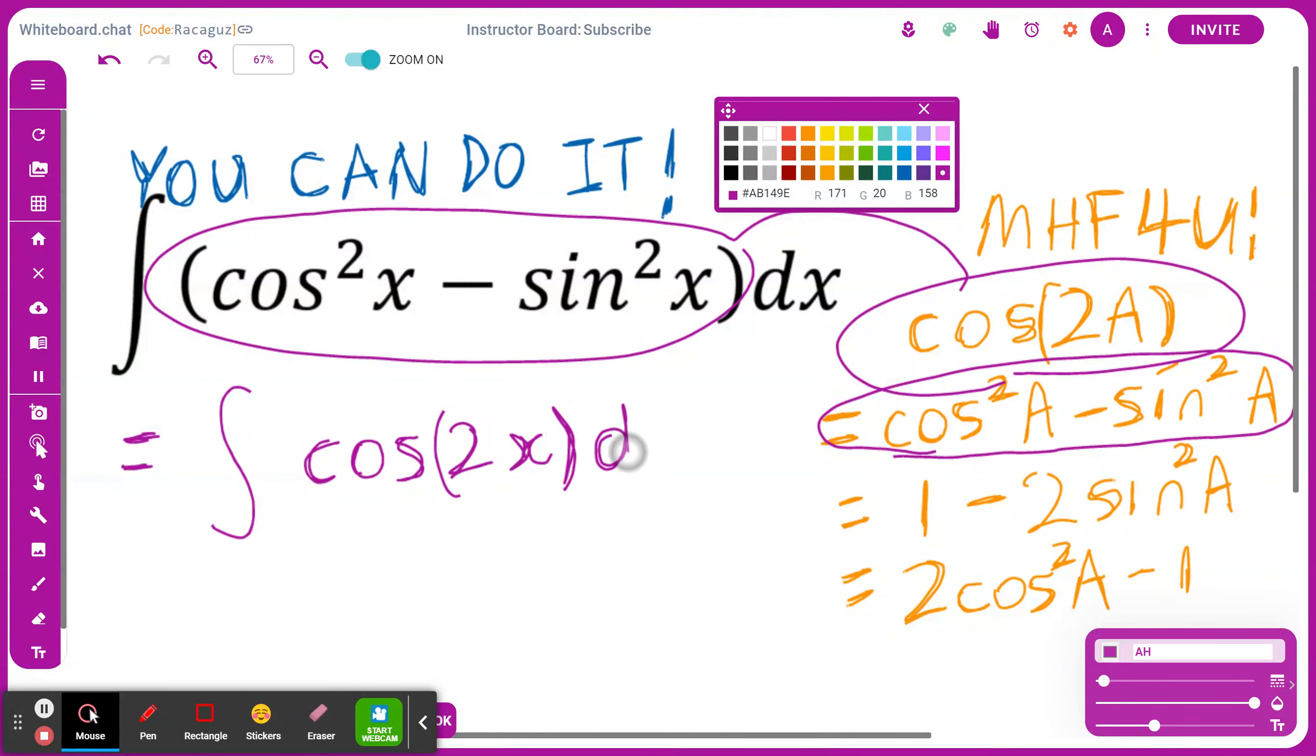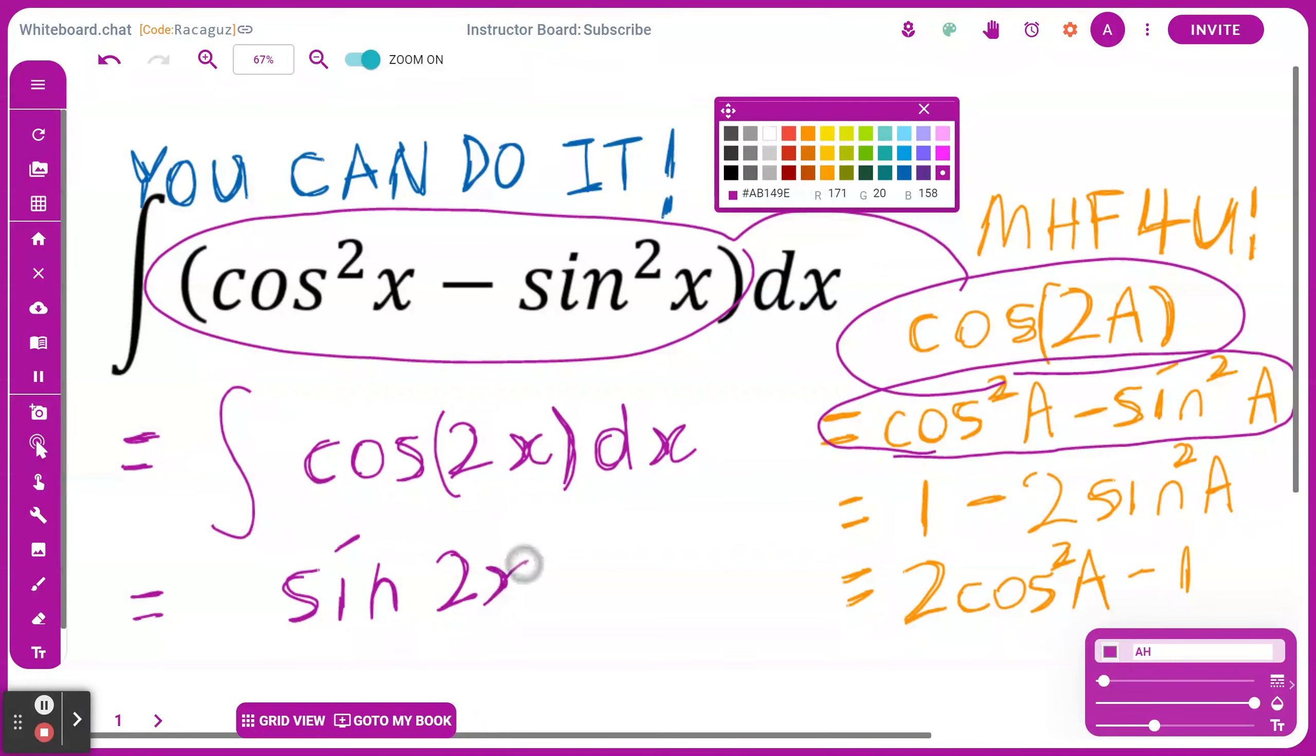I'm finding the antiderivative with respect to x. Now what this means is the antiderivative of cosine is going to be sine of 2x. Don't forget you're dividing by the derivative of 2x, which is going to be 2, and you're adding a constant C.